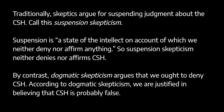The traditional skeptic argues for suspension of judgment by trying to show that competing hypotheses are equipollent. As Sextus Empiricus puts it, equipollence means equality as regards credibility and lack of it — no one of the inconsistent statements takes precedence over the other as being more credible. So we have no idea which hypothesis is true and as a result we suspend judgment. Suspension of judgment is a state of the intellect on account of which we neither deny nor affirm anything. As Walker presents it, the traditional skeptic suspends judgment about the common sense hypothesis — neither affirming nor denying it.